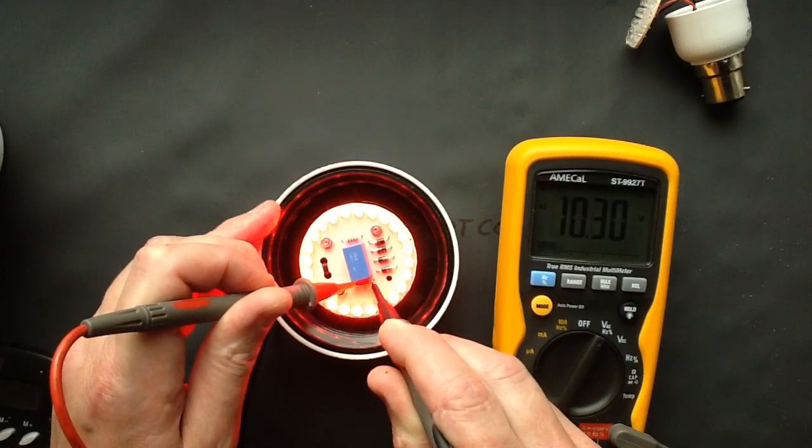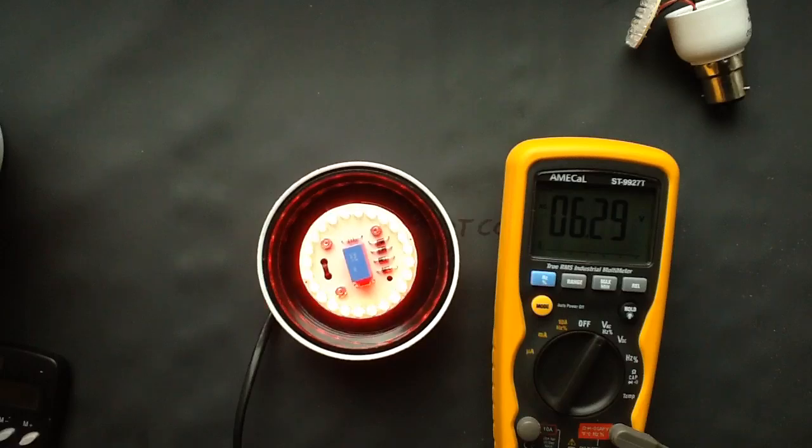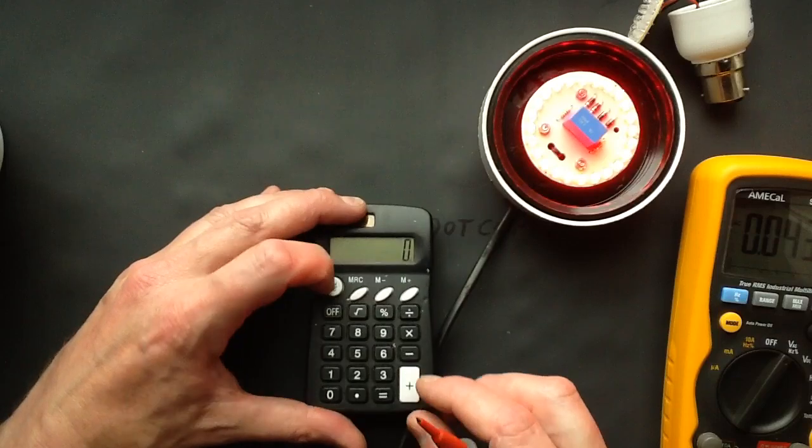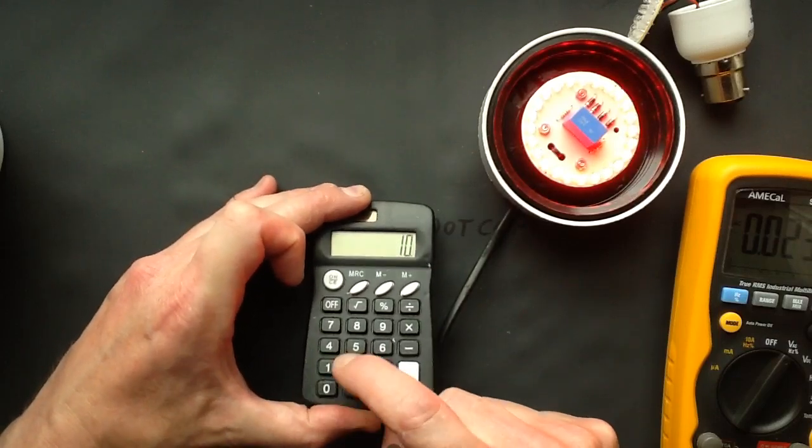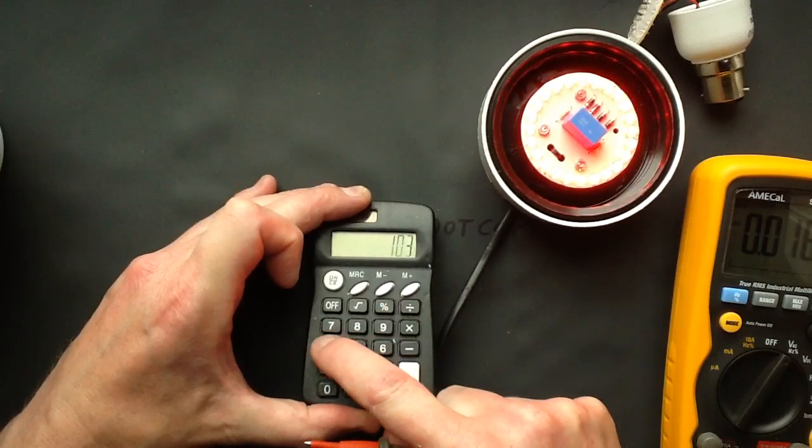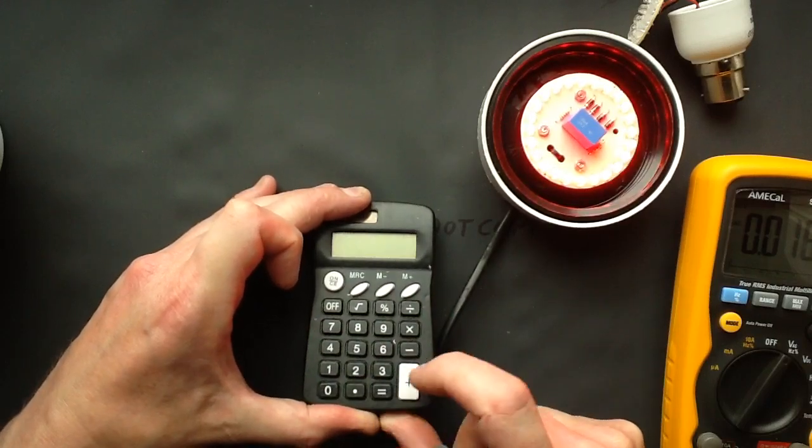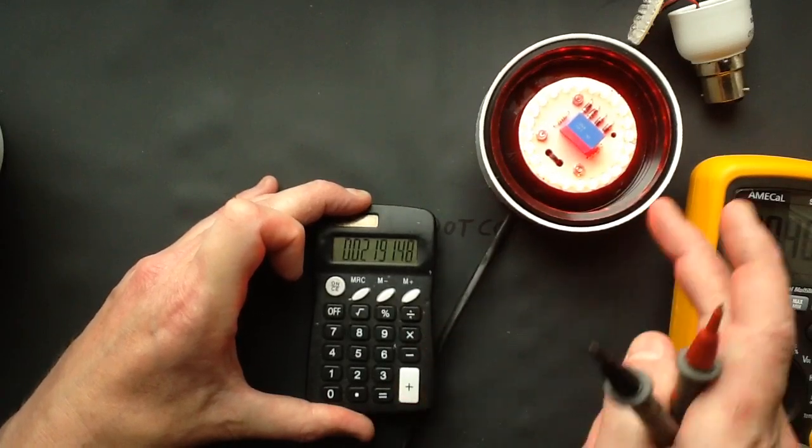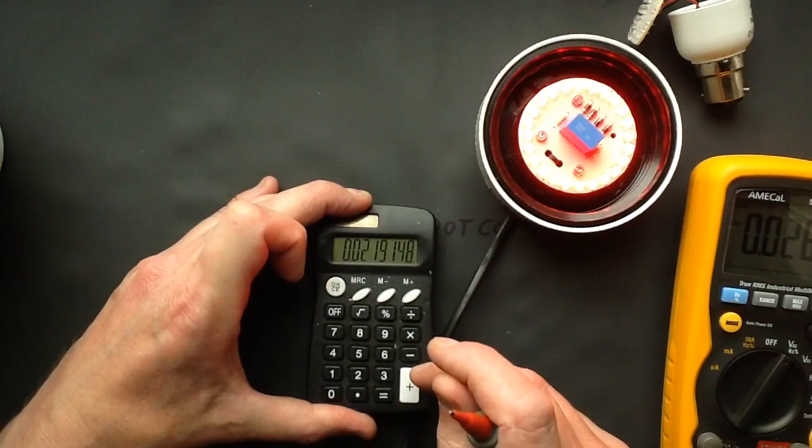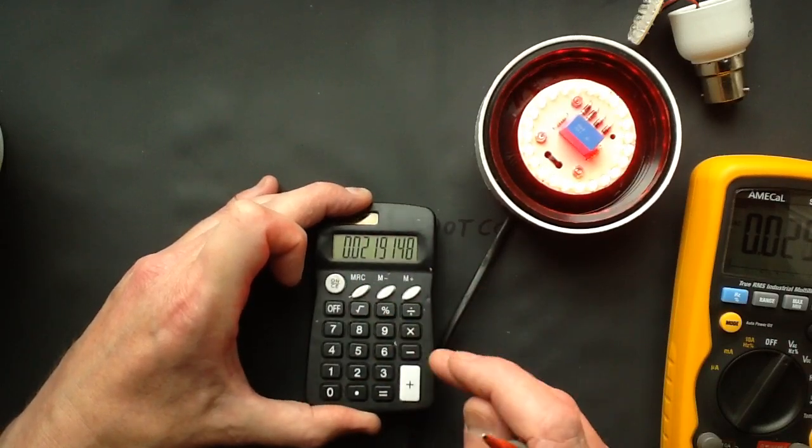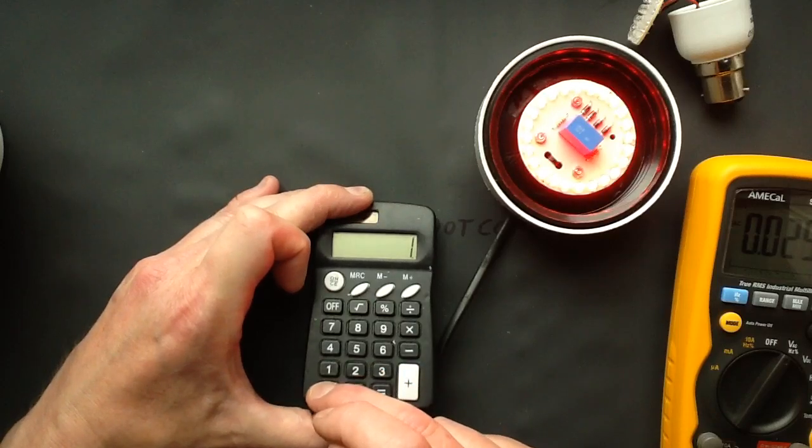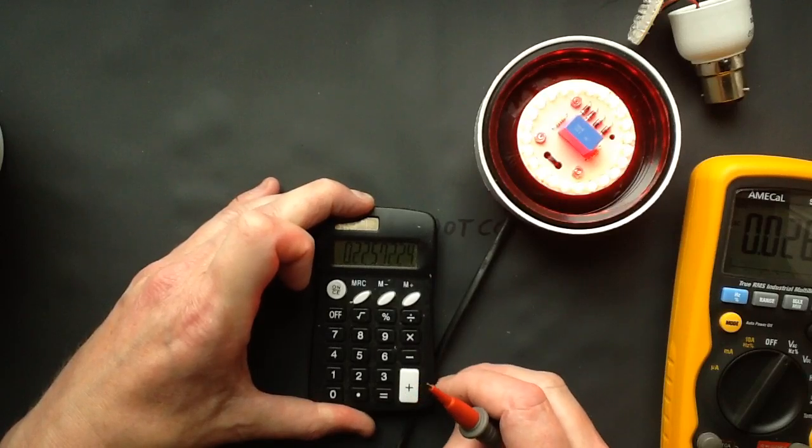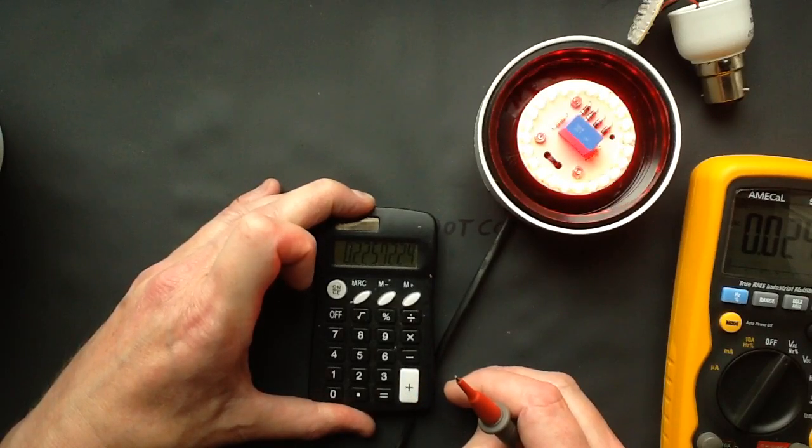And I'll measure the voltage across that resistor, which is a 470 ohm resistor. So it's about 10.3 volts. So that makes the current through the circuit, that's a 470 ohm resistor, 10.3 volts, I equals V over R, so that's 10.3 divided by 470 ohms equals 21.9 milliamps, so let's say 22 milliamps through the circuit.